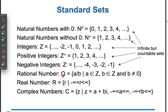Rational numbers: Q = {a/b such that a belongs to Z, b belongs to Z, and b ≠ 0}. Real numbers: R = {r such that r is between negative infinity and positive infinity}.